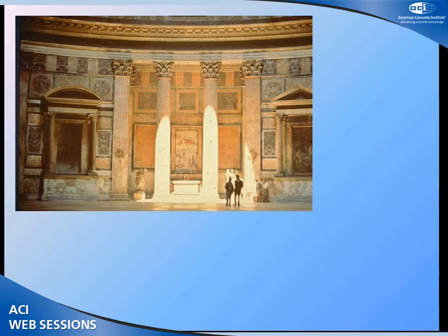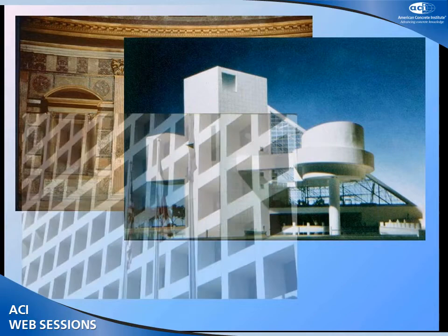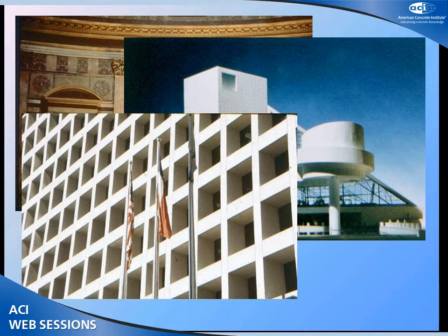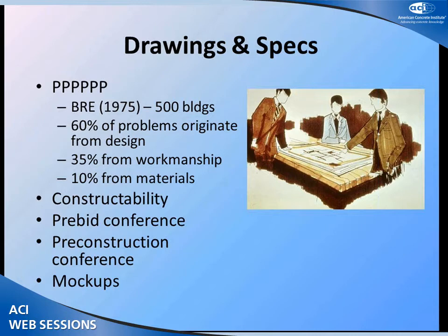Once you understand the process, we can do things like the Parthenon that last 2,000 years. We can do things like the Rock and Roll Hall of Fame. We can do things like One Main Place here in Dallas, built in 1965 — a little dirtier today but still impressive. And we can also have disasters if we don't take things into consideration and understand the process and materials being used.